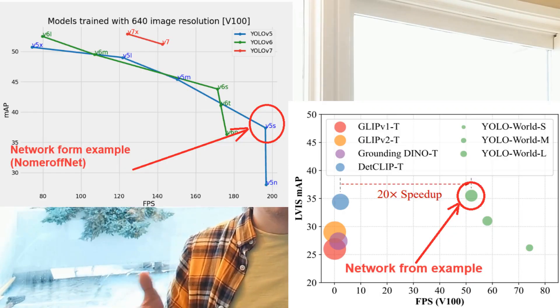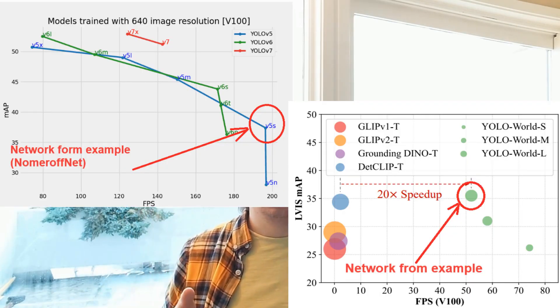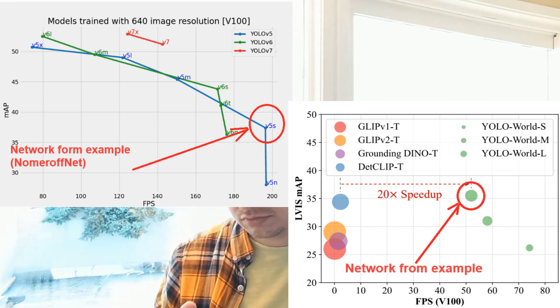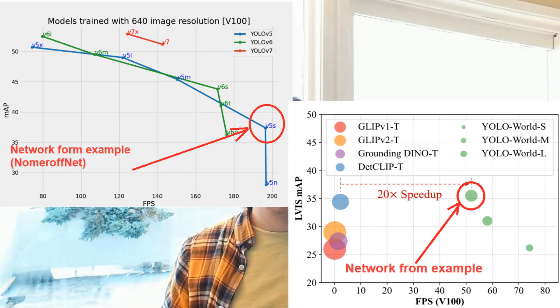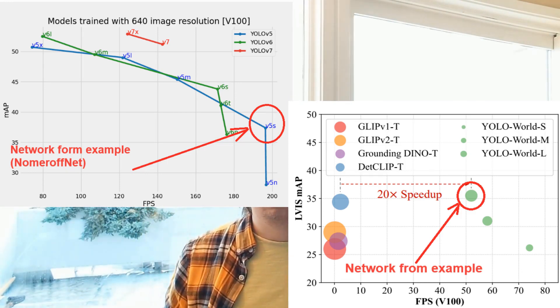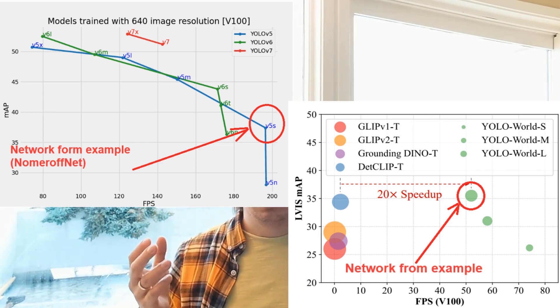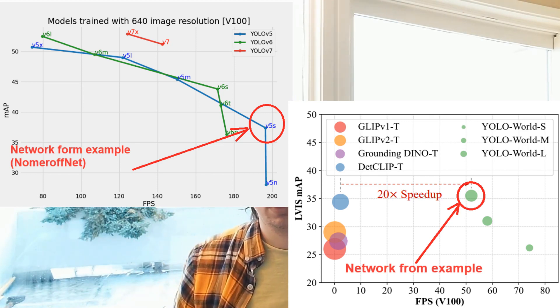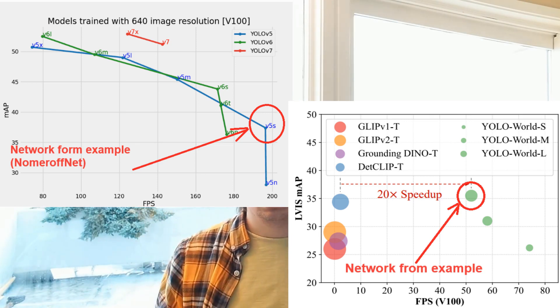The speed is also much lower than all the different solutions. Here is the graph for YOLO World — I used the L variant for generating this video — and here is the graph for YOLO v5s. Our UNet-based solution was even faster than this.